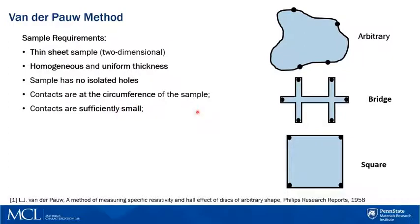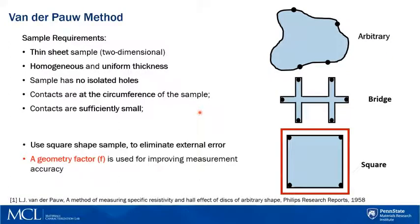When measuring an arbitrary shape sample, a geometry factor F is used to improve the measurement accuracy. For eliminating external error, we always recommend using a square shape sample if possible.